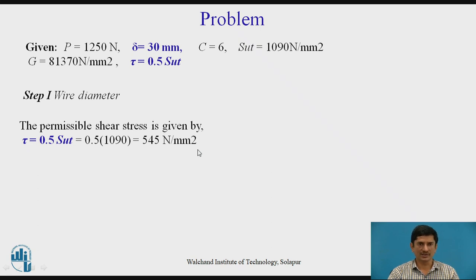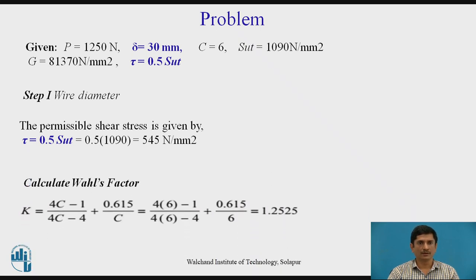With the help of this shear stress, we need to calculate the diameter. The further part required is the Wahl's factor. We know that Wahl's factor is given as K = (4C-1)/(4C-4) + 0.615/C, where C corresponds to the spring index. If I put the value of C = 6, I can get the Wahl's factor equal to 1.252.